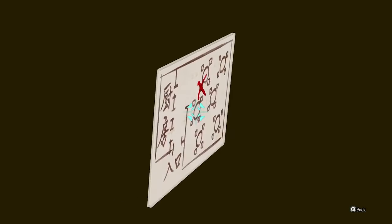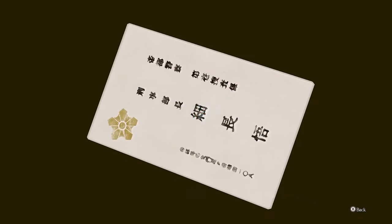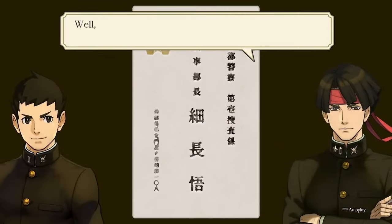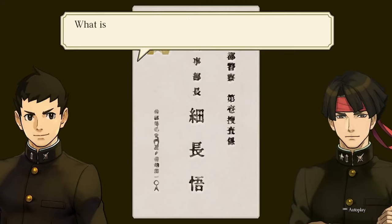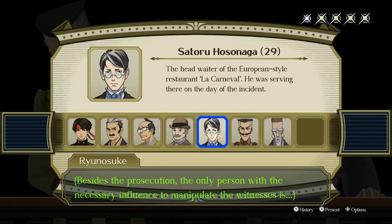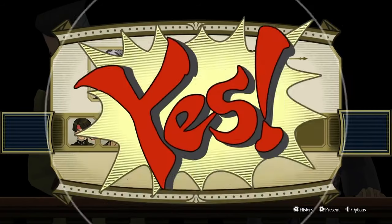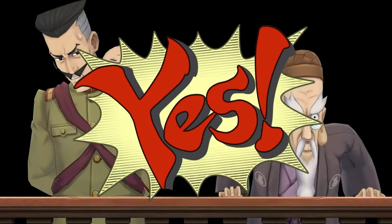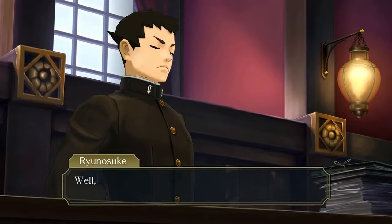Now examine the business card given to you earlier by the waiter, Hosunaga. There's some important information on the rear of the card. When asked who could keep the third party secret, select Hosunaga and then present the business card as evidence.